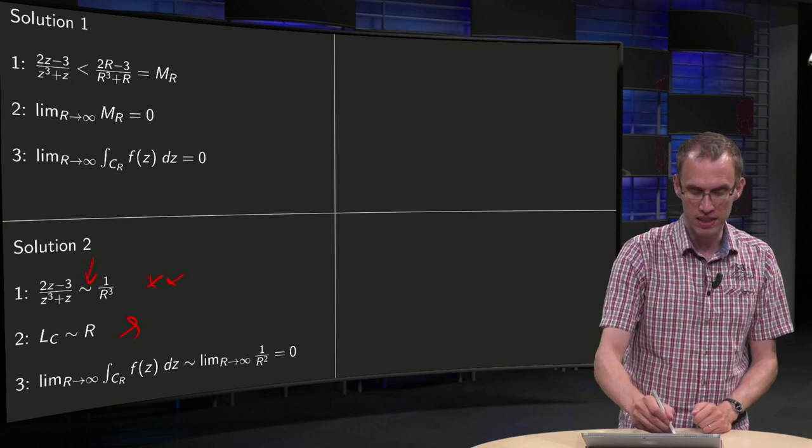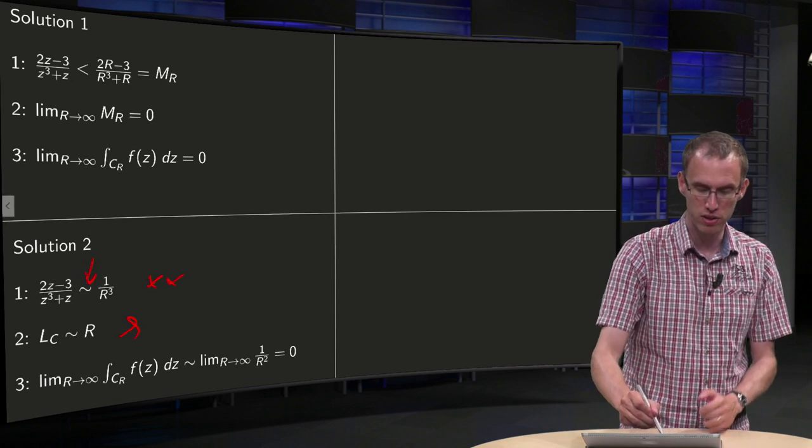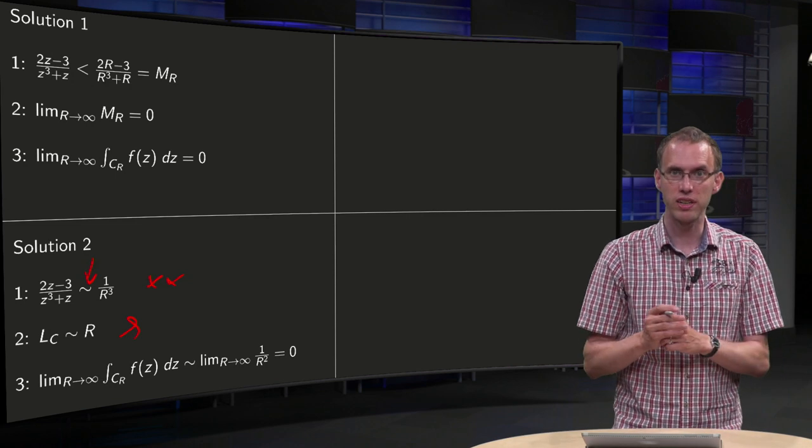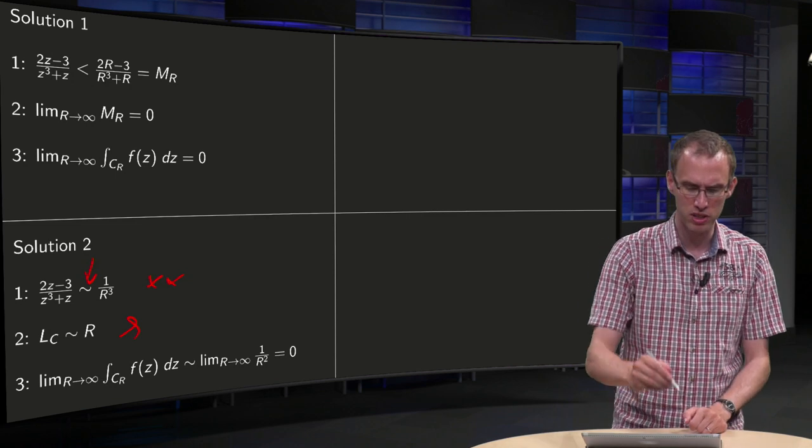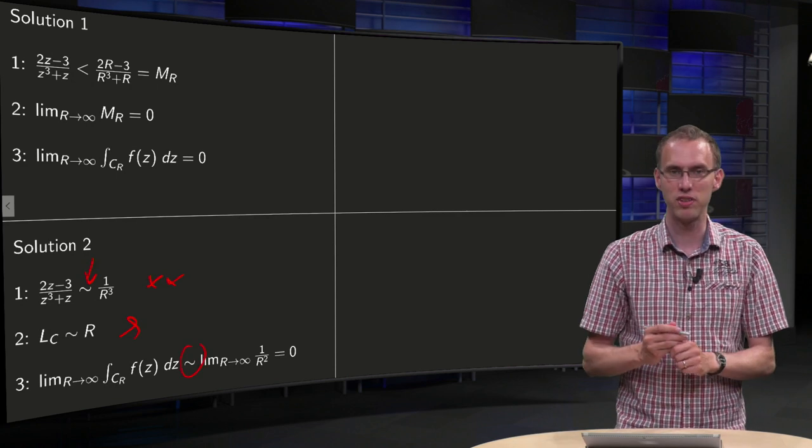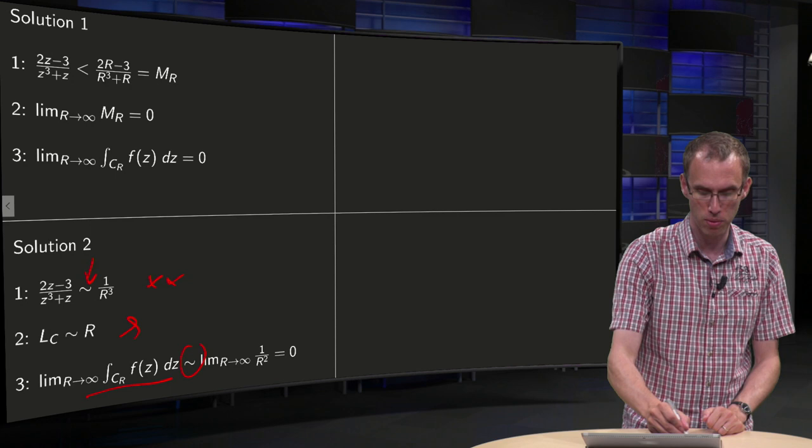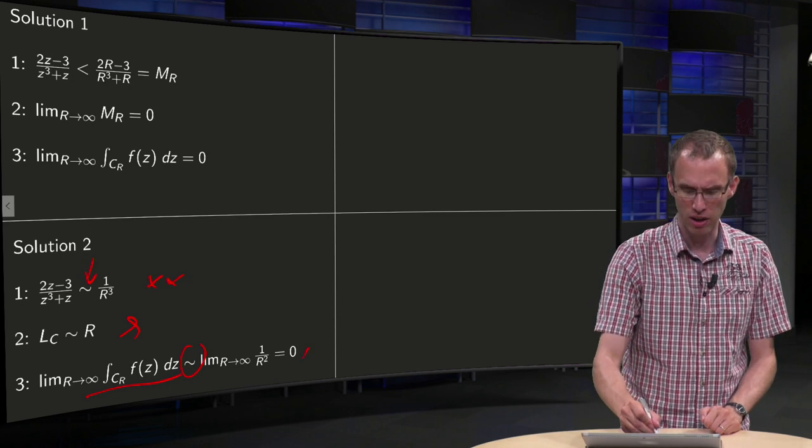And this idea in step 3 is OK, that you take the product and you see it behave like 1 over R squared, but still, what do you exactly mean with the tilde? It is also a bit vague, especially because you have a complex number over here. So well, now just don't do this.